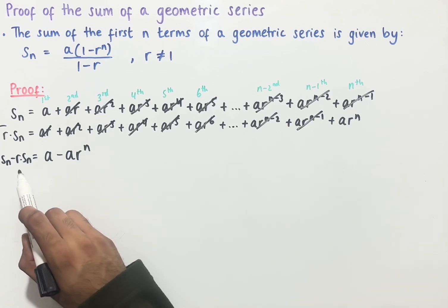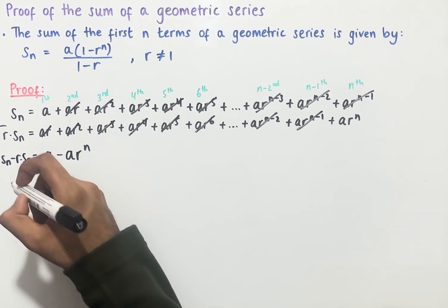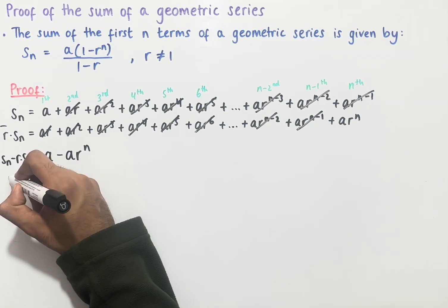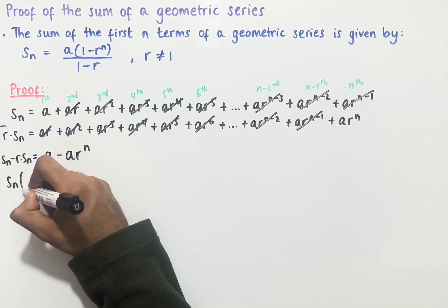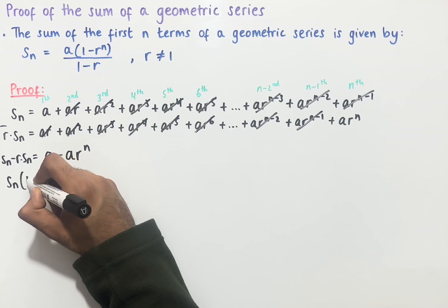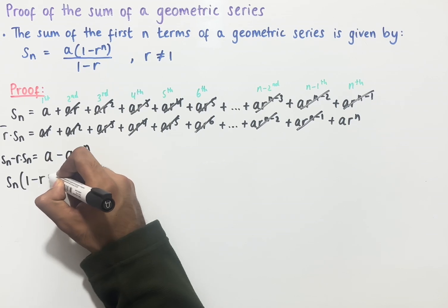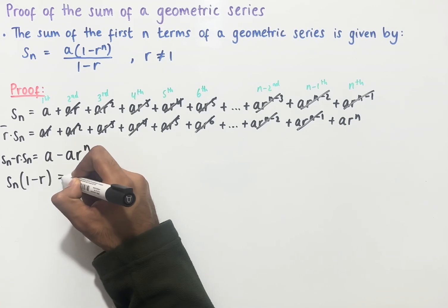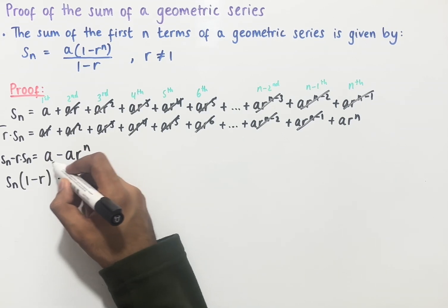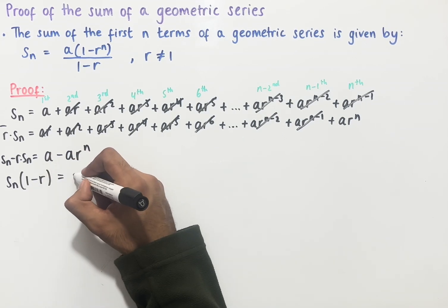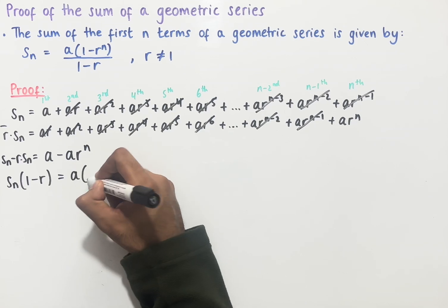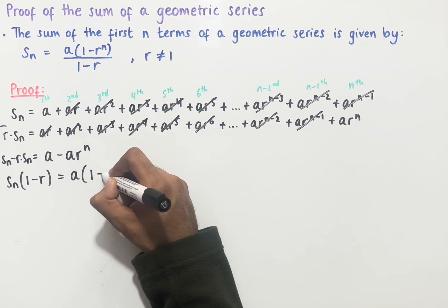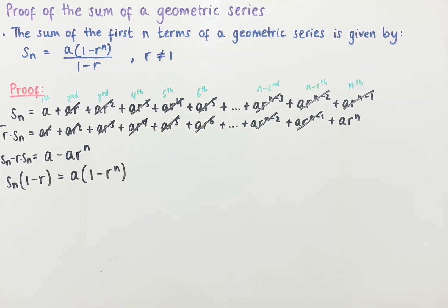On the left hand side we can factorise Sn out, which gives us Sn brackets 1 minus r, and then on the right hand side we can factorise an a out, which gives us a brackets 1 minus r to the power of n.